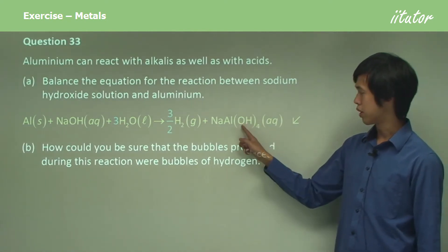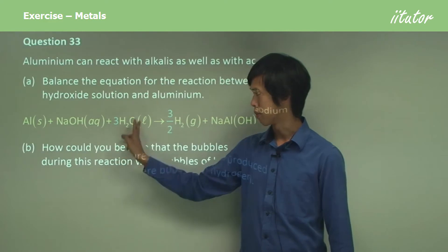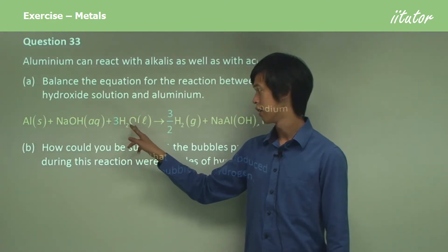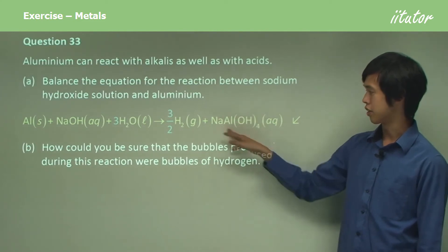Then we've got four oxygens here. We've got one oxygen here, so we multiply this one by three to get four oxygens on the left-hand side. Now we have four oxygens on this side.